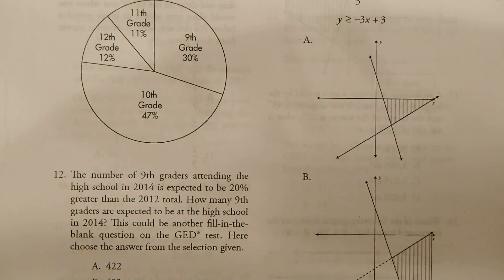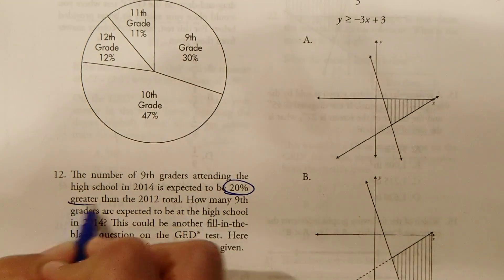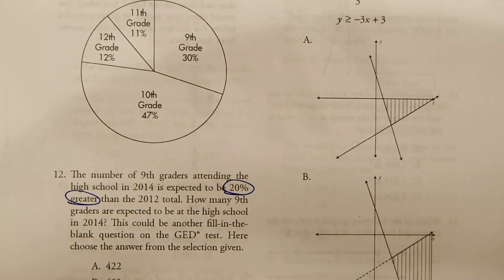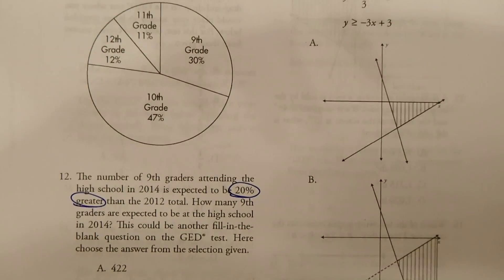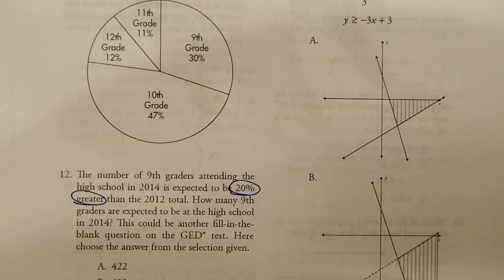The number of ninth graders attending the high school in 2014 is expected to be 20% greater than the 2012 total. So this is 2012. How many ninth graders are expected to be at the high school in 2014? This could be another fill in the blank question on the GED test.